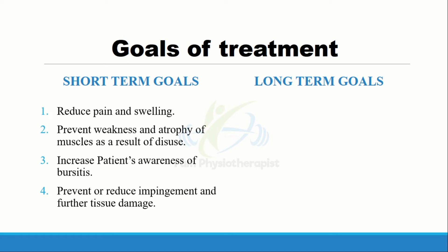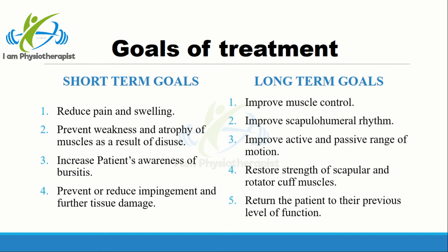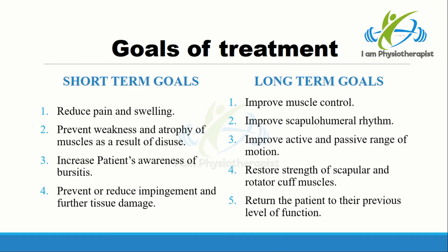Short-term goals include reduction of pain and swelling, prevention of weakness and atrophy of muscles due to disuse, patient education about bursitis, and prevention or reduction of impingement and further tissue damage. Long-term goals include improvement of muscle control, improvement of scapulohumeral rhythm, improvement of active and passive range of motion, restoration of strength of scapula and rotator cuff muscles, and return of the patient to their previous level of function.